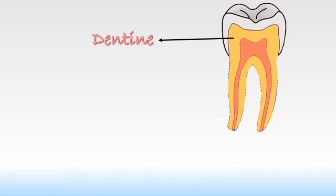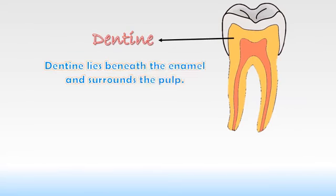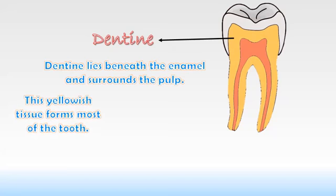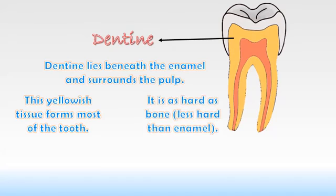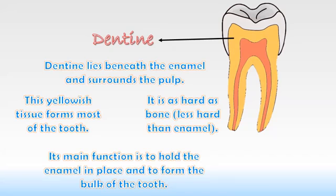Dentine lies beneath the enamel and surrounds the pulp. This yellowish tissue forms most of the tooth. It is as hard as bone but less hard than enamel. Its main function is to hold the enamel in place and to form the bulk of the tooth.